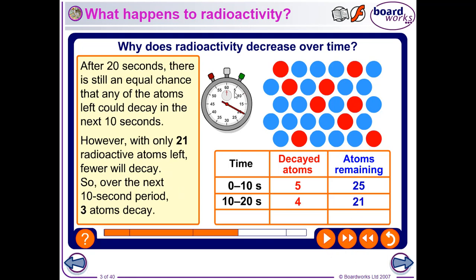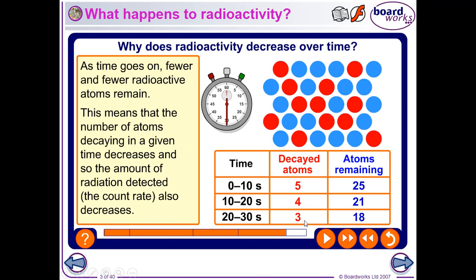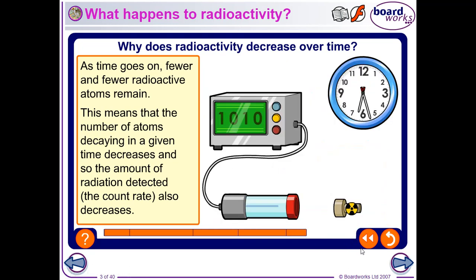After another 10 seconds, 4 of the remaining 25 have decayed and there are only 21 left. After another 10 seconds, 3 more have decayed, leaving only 18. As the number of atoms remaining reduces, so does the number of decays per second. Over a certain amount of time, this count rate has dropped from 4,000 down to 1,000.